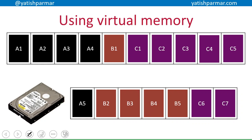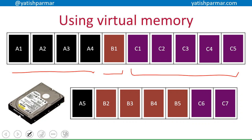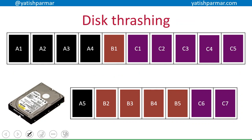With virtual memory and pages, we move beyond the basic definition of swapping entire programs. Instead, we swap only the pages that are not in use. With multiple programs open, sections of each program not currently in use go into virtual memory. So if I need page B4 but no longer need B1, the memory manager moves B1 to secondary storage and loads B4 into main memory.